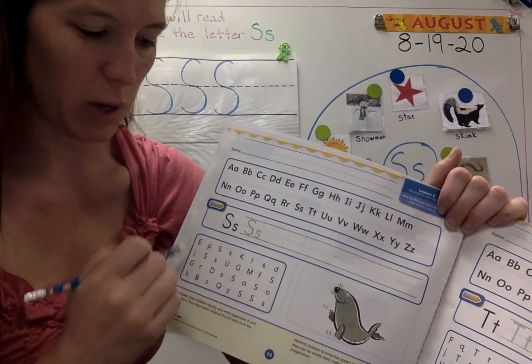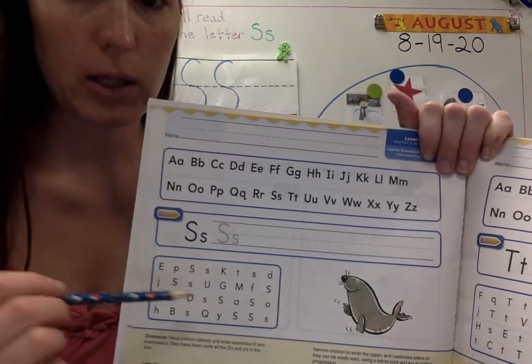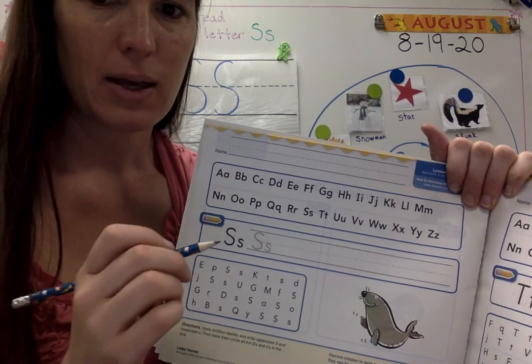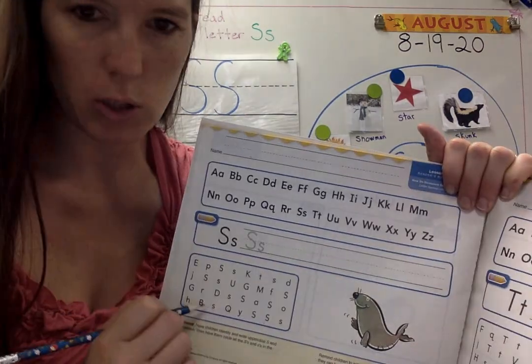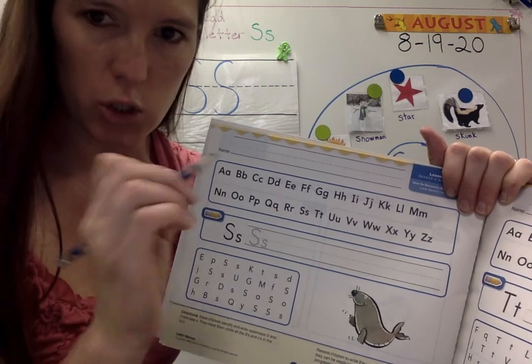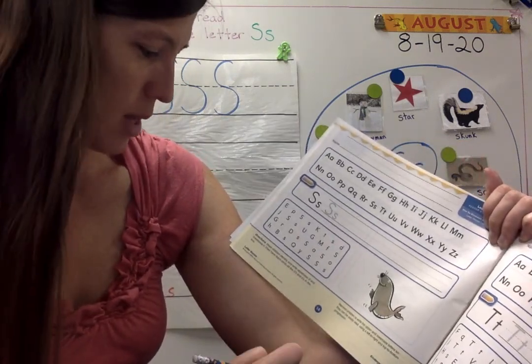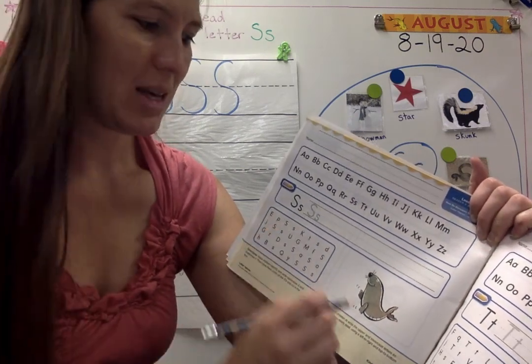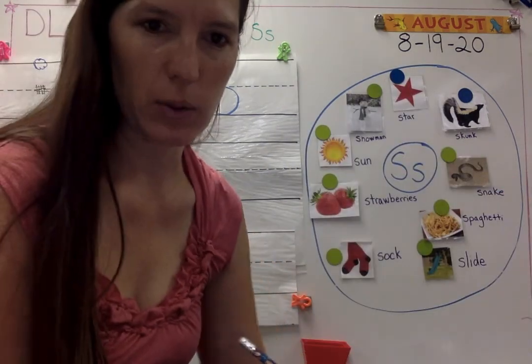In this box here, it's a search box. It has capital letters and lowercase letters. You only need to circle capital S and lowercase s. They're jumbled up, so go slow so you don't miss them, and just circle them. And that's all you need to do. And then there's a little seal there for S. S. Seal. And that will be your letter S today.